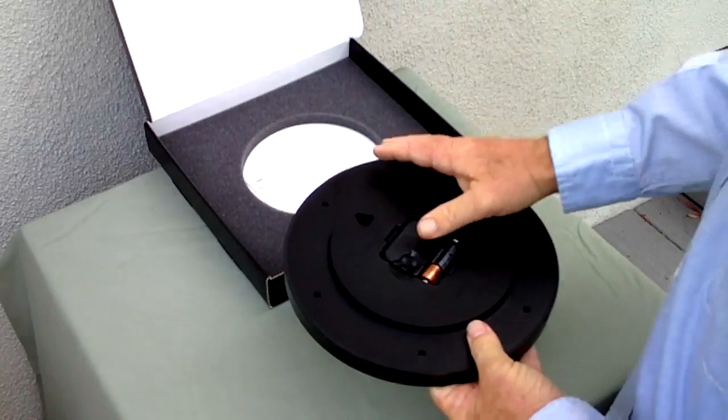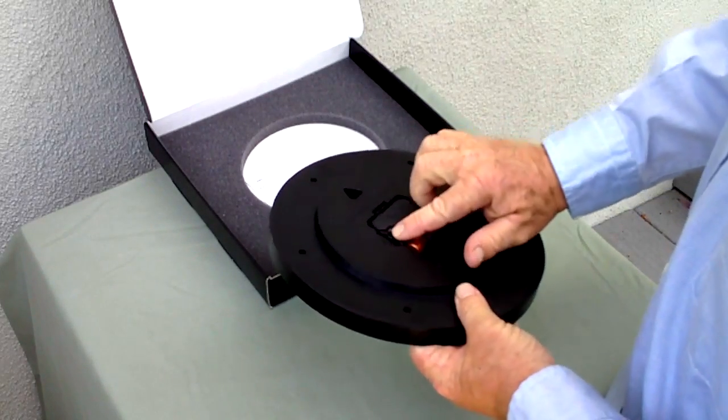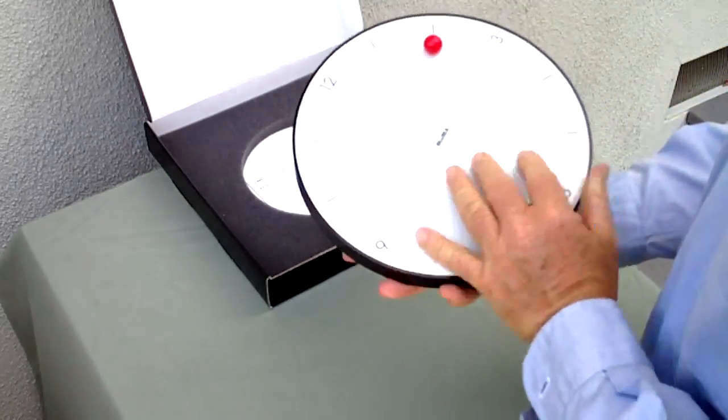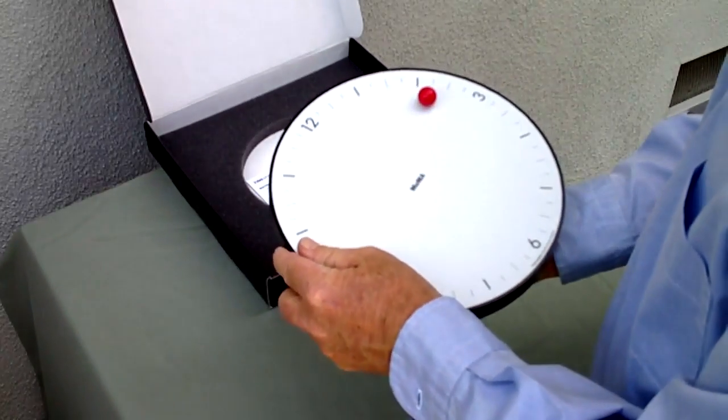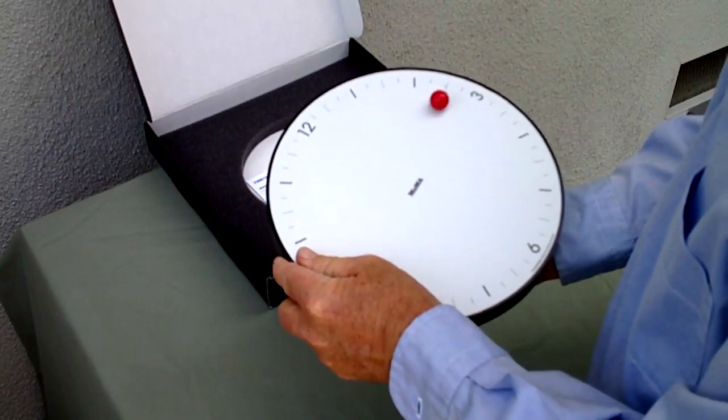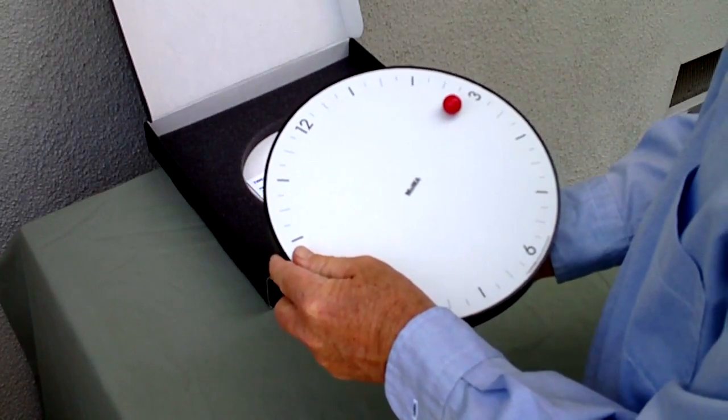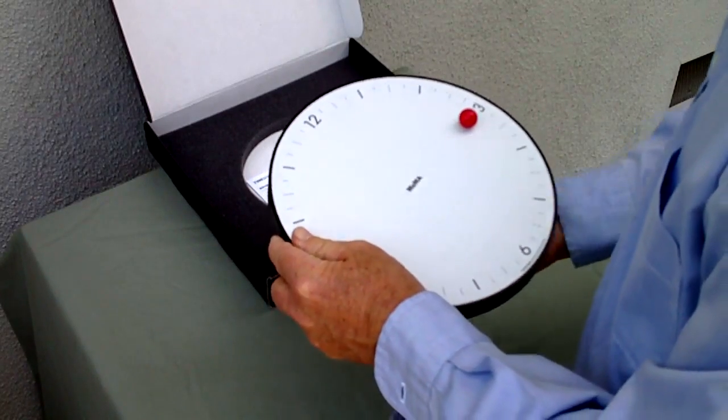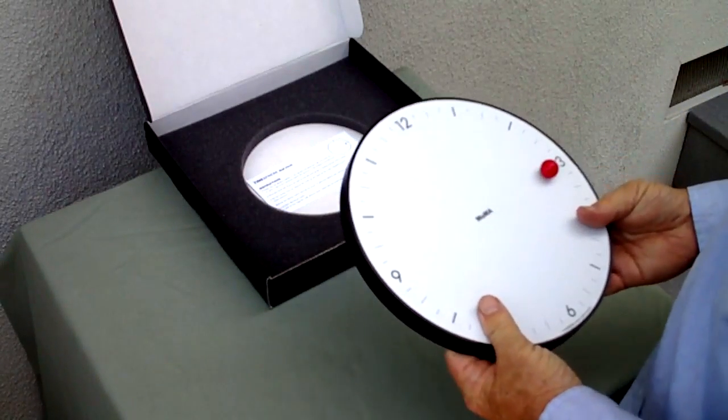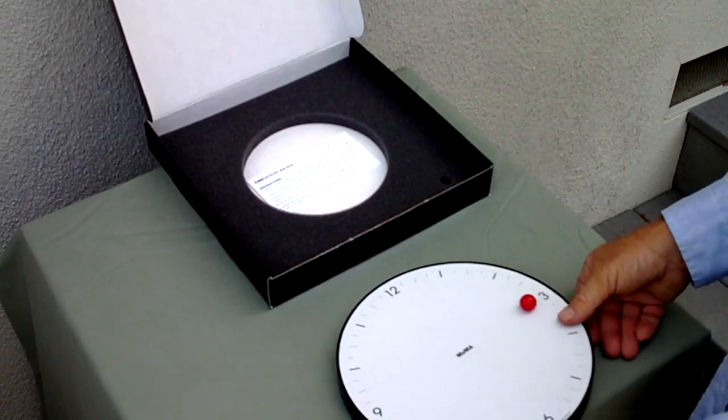Set the time by rotating the knob on the back of the clock. Each line on the clock face represents 15 minutes. For example, 2:15. Repeat at 6 or 12 o'clock for more precision.